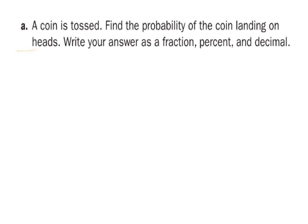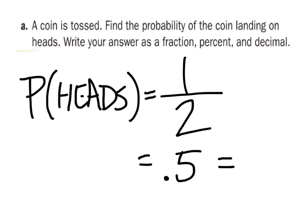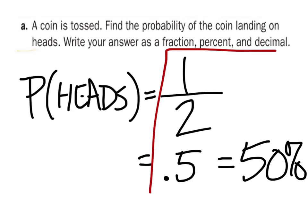Give this one a shot: you're tossing a coin — what are the chances it'll land on heads? There are only two possible situations: you get heads or tails. The probability of heads — we've got a fraction, there are two outcomes, one of those is heads. The decimal is 0.5, which is the same as 50%. And that's all we needed.